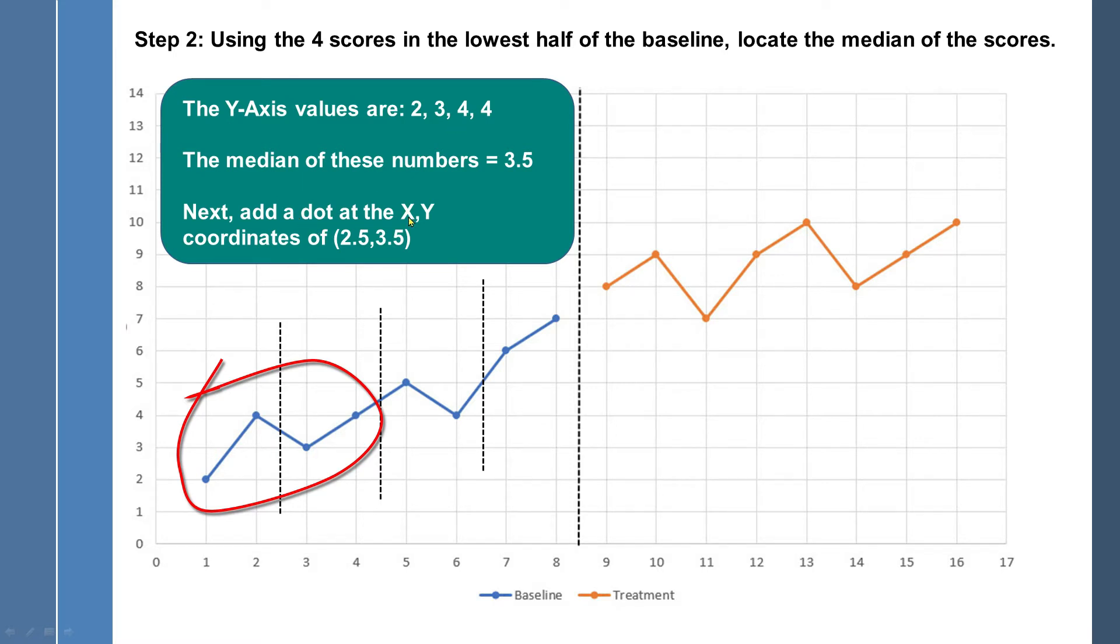Next, add a dot at the x and y-coordinates of 2.5 and 3.5. The 2.5 is from the x-axis. That's where this line, this vertical line is. And then the 3.5 we're going to carry a line over from the y-axis to get that. So now you can see where the cross is of those two lines. That's where we're going to drop down a dot and we're going to save that dot and that's going to be an anchor for our trend line. So there I've got a red dot on that position. And now we can move on to the top half of the baseline.